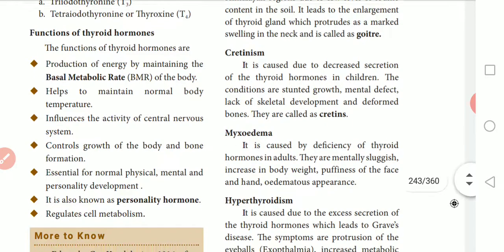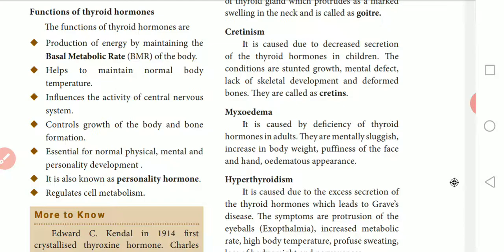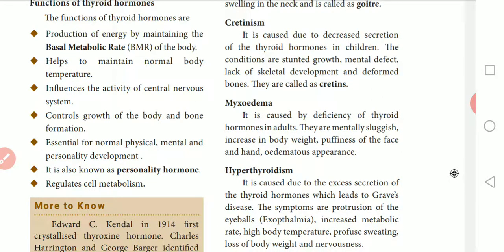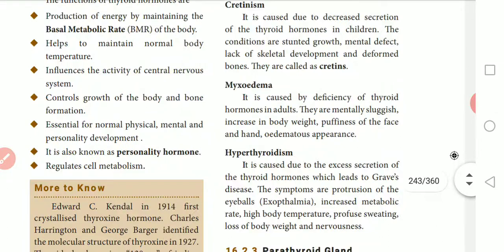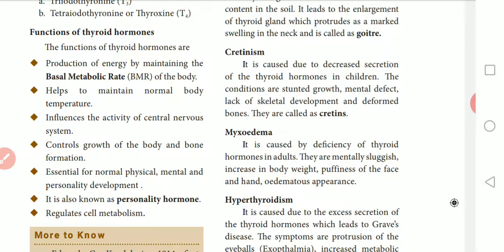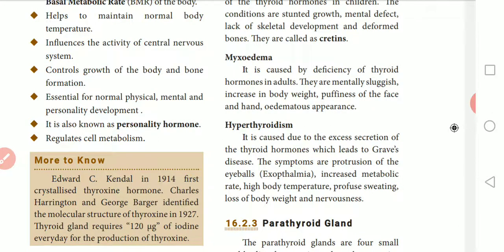The next condition is myxedema, which occurs in adults. Cretinism affects children, while myxedema affects adults. It is caused by deficiency of thyroid hormone in adults. Symptoms include being mentally sluggish, increased body weight, and puffiness of the face and hands. The next condition is hyperthyroidism.